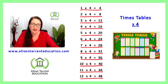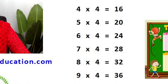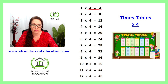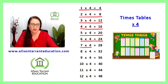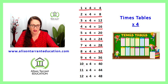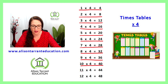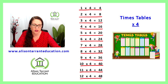Excellent. Let's practice that again. 1 times 4 is 4, 2 times 4 is 8, 3 times 4 is 12, 4 times 4 is 16, 5 times 4 is 20, 6 times 4 is 24, 7 times 4 is 28, 8 times 4 is 32, 9 times 4 is 36, 10 times 4 is 40, 11 times 4 is 44, 12 times 4 is 48.